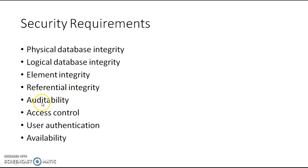There are two kinds of auditing: operating system auditing and database auditing. Database auditing keeps logs of each and every transaction - if there is any change, insertion, or deletion, a log file is created. You can track back, take backups, and return to a previous state. Auditability is an important security requirement.